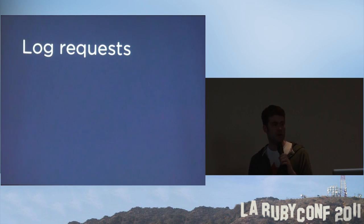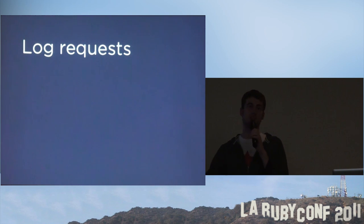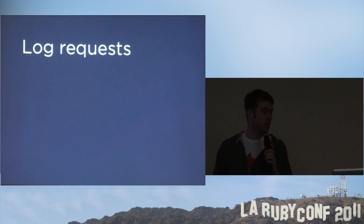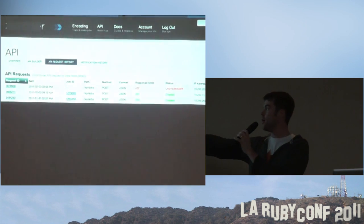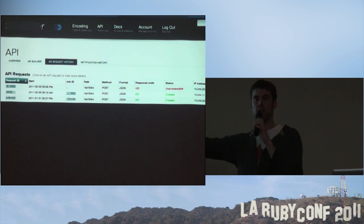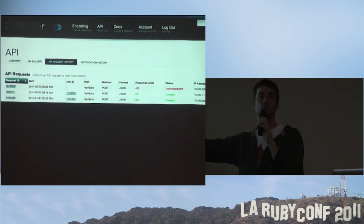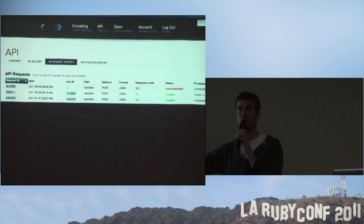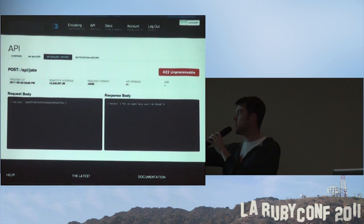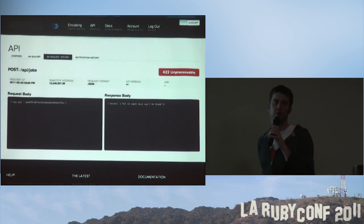Consider logging API requests — every time a request comes in, write it to some data storage. You can then display that log to the user so they can look at all the API requests they've made. This is really useful when they're trying to get set up with an API or figure out why something didn't work. Give them the ability to see what they sent, what you responded with, and if there was a problem, what was wrong.